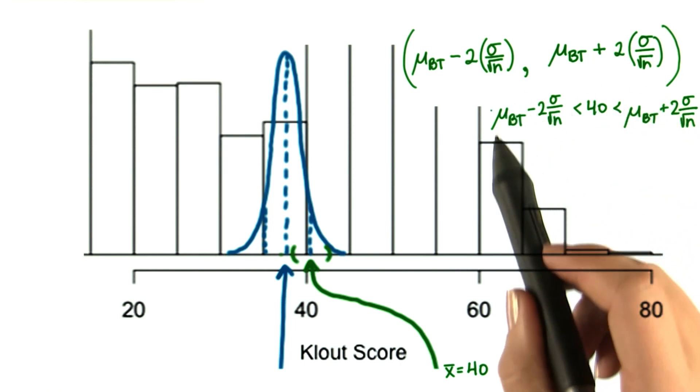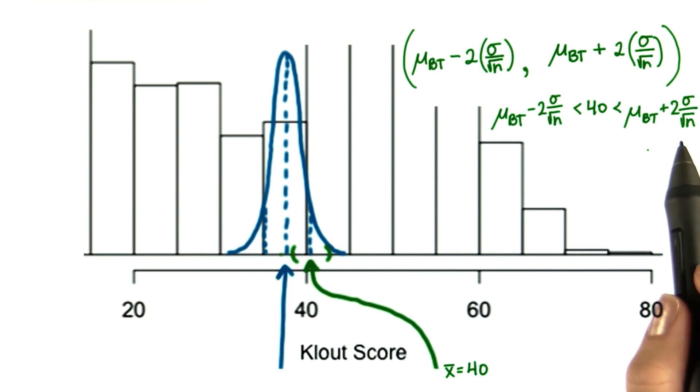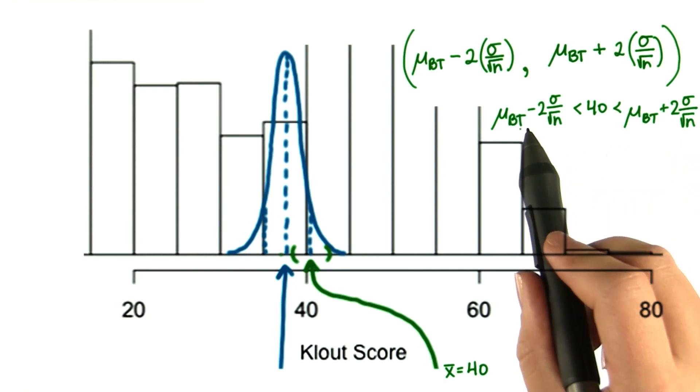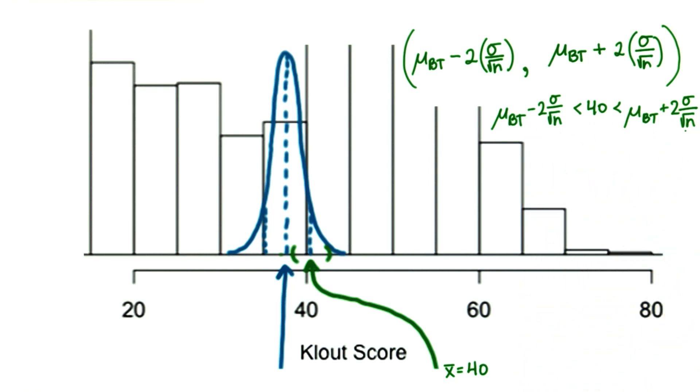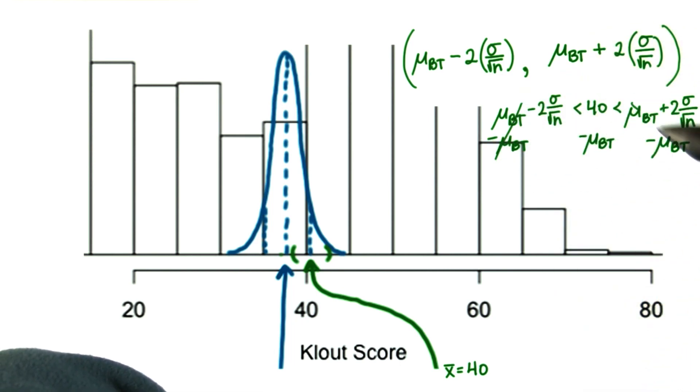Do you remember how to solve inequalities like this? So we're trying to solve for the population mean. So let's subtract it from all three sides of this inequality. If we do that, then these cancel and these cancel.